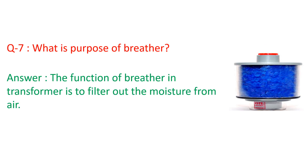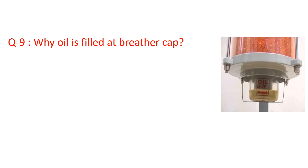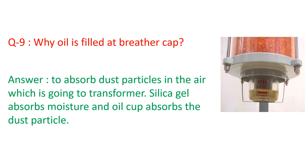What is the purpose of a breather? The function of the breather is to filter out moisture from the air. What is filled inside the breather? Silica gel — it absorbs moisture from air. Why is oil filled at the breather cap? It is there to absorb dust particles in the air. So silica gel absorbs moisture and the oil cup absorbs dust particles. This is a very minute observation but very important.